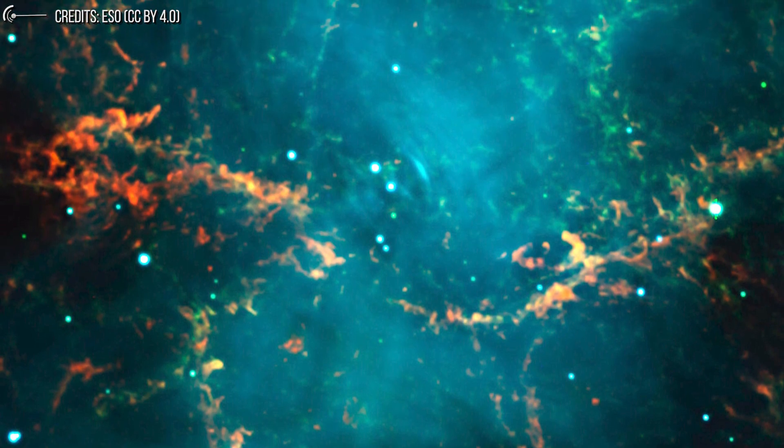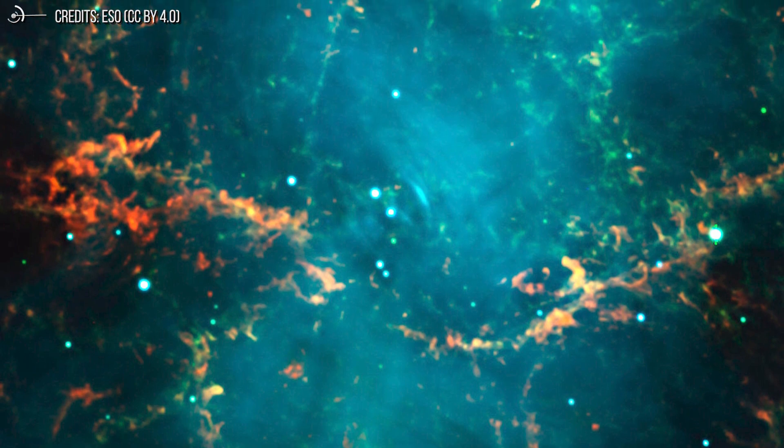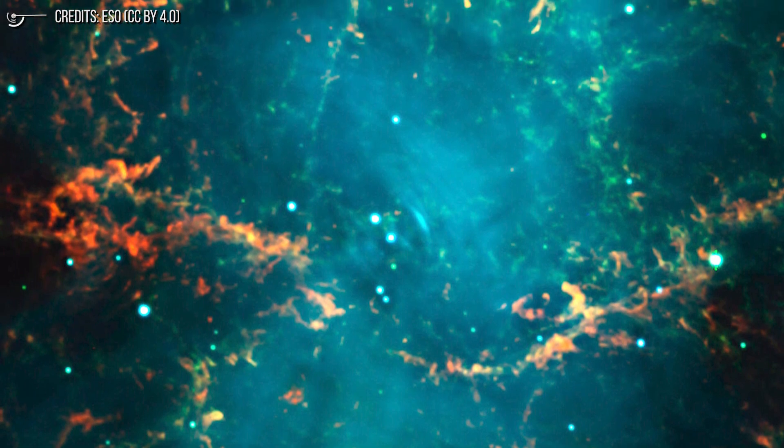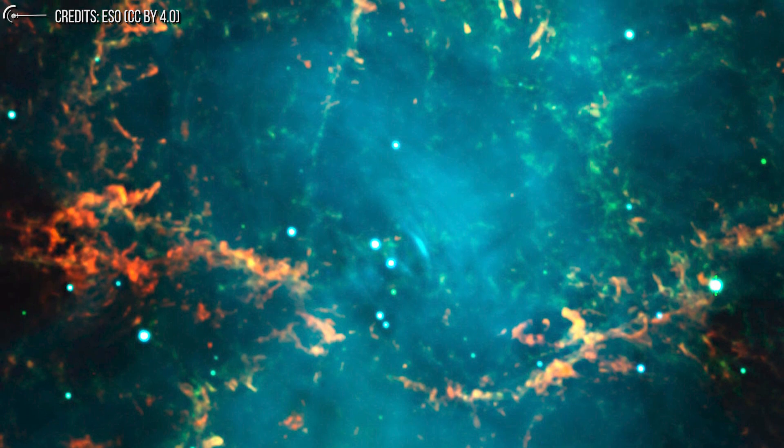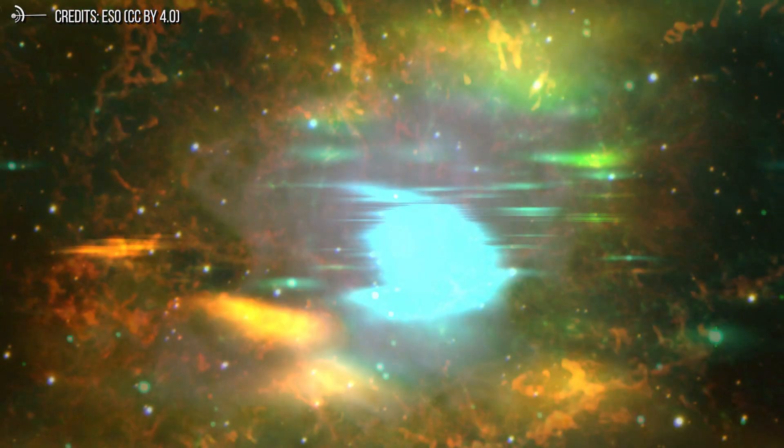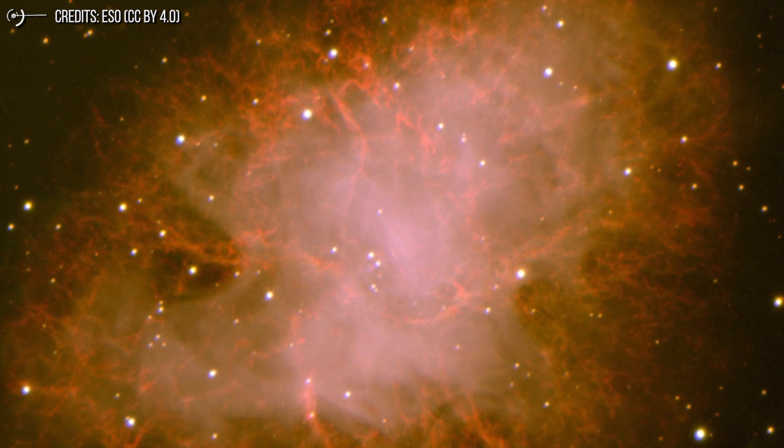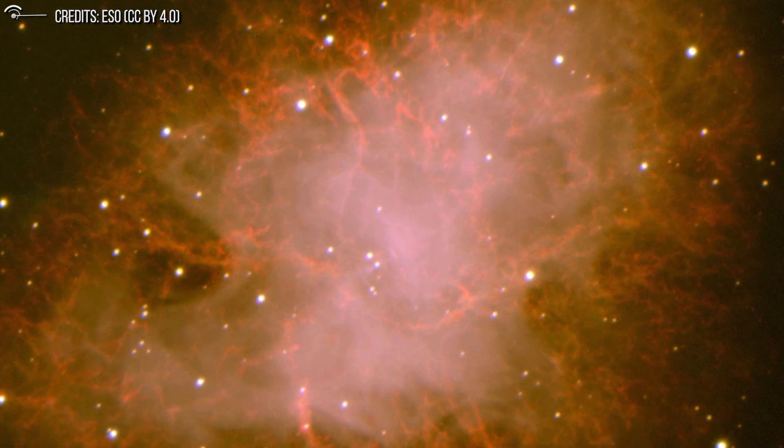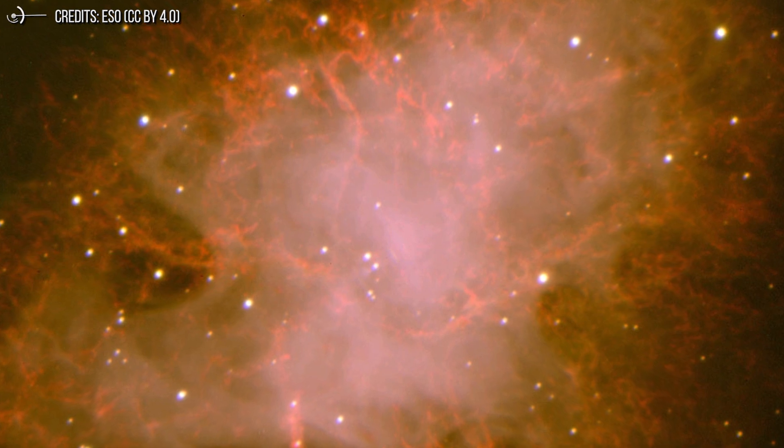The ultimate energy source in our model is the rotation of the neutron star, which propels charged particles outwards and spins its magnetic field at enormous speeds. As its rotational energy is used to excite the Crab Nebula year after year, the pulsar inside the nebula slows down.